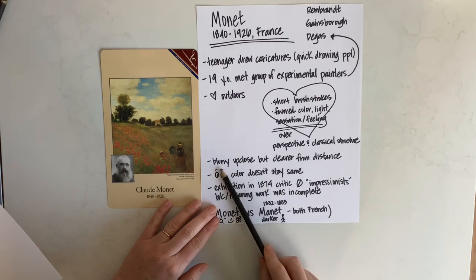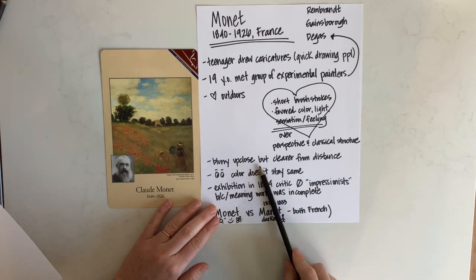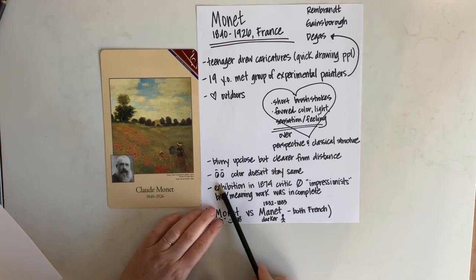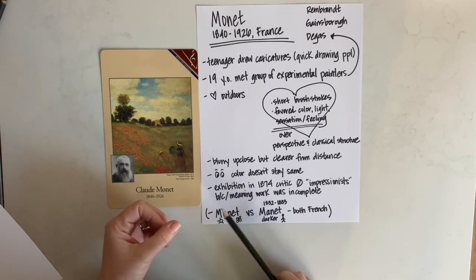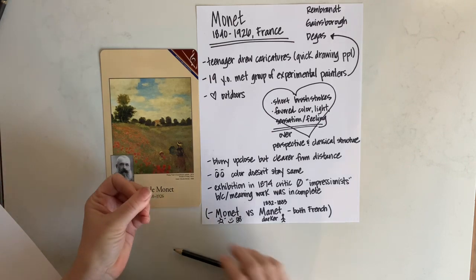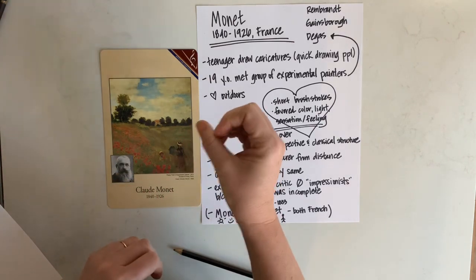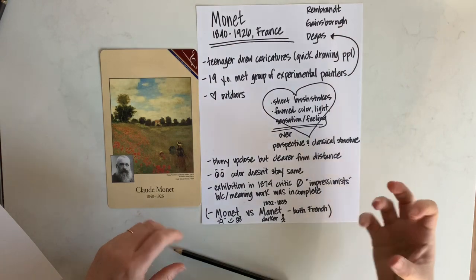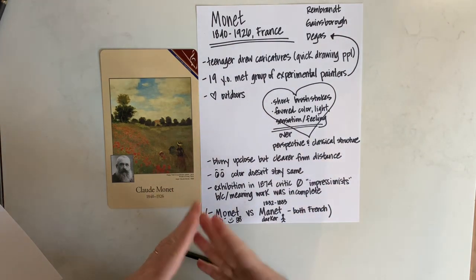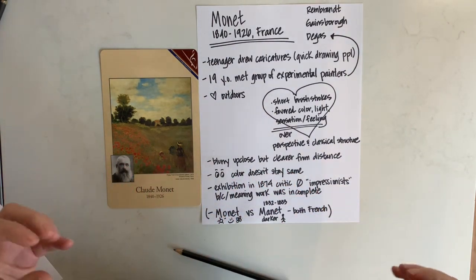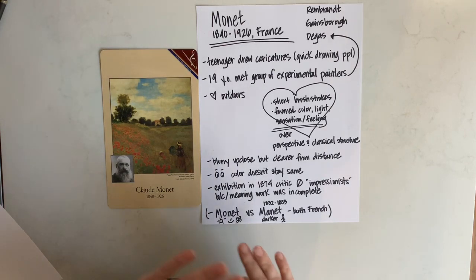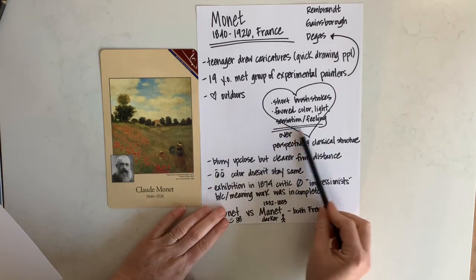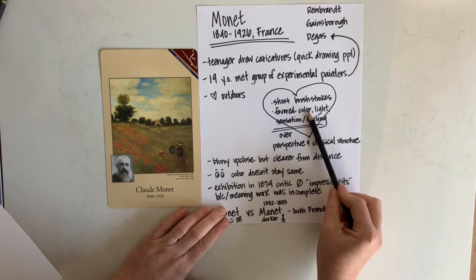If you look at his work, it will be blurry up close but clear from a distance. He loved looking at color and how it does not stay the same — a flower in the morning versus in the harsh noon sun versus at sunset will have the same color, but the way the light falls on it completely changes that sensation and feeling, and what colors you use.